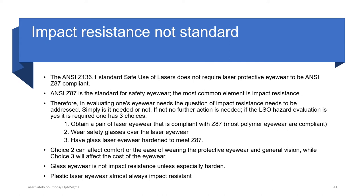Impact resistance is not a requirement in the standard. If you feel it is important for your application, you need eyewear that states it is impact resistant — in the United States, that would be Z87 compliance. You cannot assume all plastic eyewear is Z87 compliant; if it's not labeled as such, it's not compliant. If you can find a compliant pair, problem solved. If not, you could try putting safety glasses over your eyewear, which is generally impractical, or have a glass lens hardened to meet the standard, which is expensive. The people most concerned about this are the military, who focus on ballistic levels.